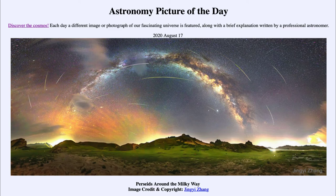The meteors don't actually get any closer together — just as we know railroad tracks don't — and neither do the meteors here. They're really not converging back to that constellation; it is just an optical effect that we see.